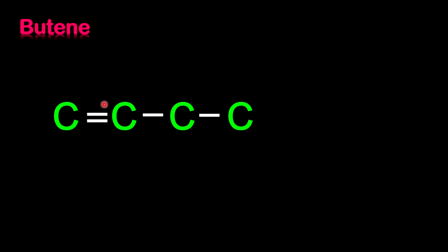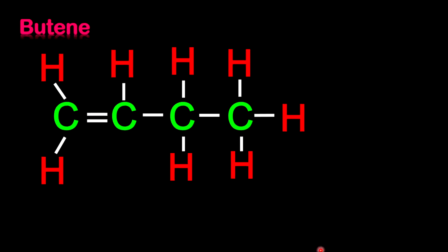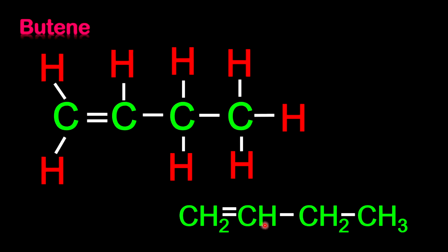Our next example is butene. The double bond is present; the first carbon gets 2 more lines for hydrogen. The second carbon has 2 lines from the double bond and 1 single bond, so it needs 1 more line. The third carbon has 2 single bonds, so we need 2 more. The last carbon has 1 single bond, so we need 3 more bonds. The condensed formula is CH2=CH-CH2-CH3.